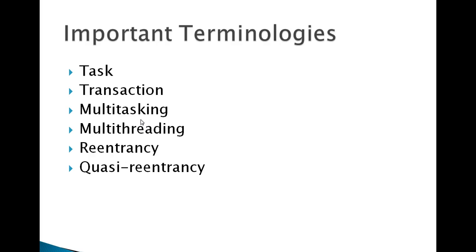In simple terms: if 50 users are using a program called XYZ, CICS will provide 50 working storage areas for that program, but there will be only one procedure division. This technique is called quasi-reentrancy. To repeat: 100 users using the same program XYZ — CICS produces 50 working storage areas for that particular program with the same procedure division, and this technique is called quasi-reentrancy. These are the very important terms that we are going to use throughout CICS.